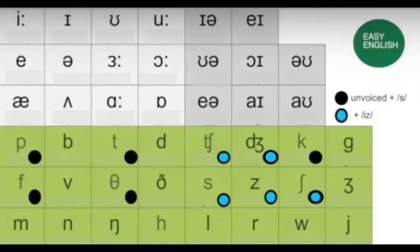A few of the consonants that have a restricted airway are nevertheless unvoiced. They are marked here with black dots. We'll talk about the blue dots later. P, F, T, TH, and K. Some examples would be Mandeep's hat, Yusuf's hat, Juliet's hat, Queen Elizabeth's hat, and Beck's hat — like David Beckham's hat.